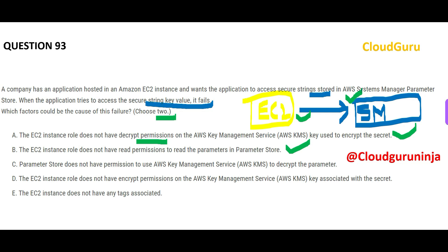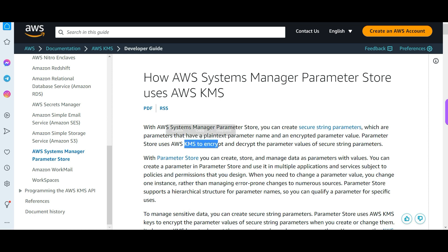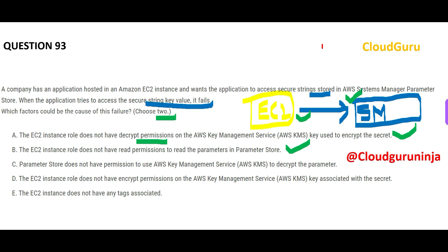You might ask why not option C. Option C says that when it is trying to encrypt the parameter values, it is not able to talk to KMS. But the documentation said Systems Manager will talk to KMS to encrypt and decrypt. Option C is like the girl not being able to talk to her cousin — why would the boy care about that? It's not even linked to this problem, so C is wrong.